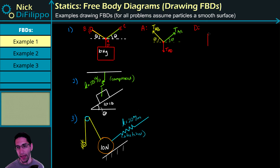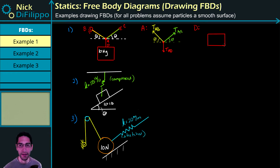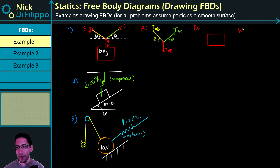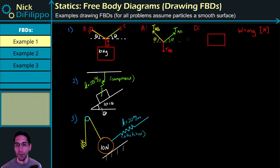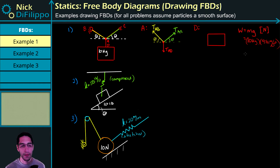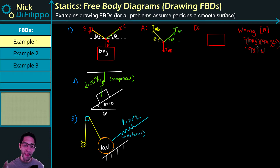For block D, the first thing we do is draw a simplified sketch of object D — that's the crate. We're told it has a mass of 10 kilograms, so we know it has a weight force. We need to be careful: weight equals mass times gravity, and we need this in Newtons. We have kilograms, so we multiply by 9.81 — ten kilograms times 9.81 meters per second squared gives us 98.1 Newtons. That is the weight, and it always acts straight down.